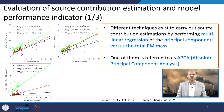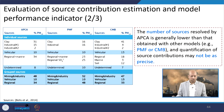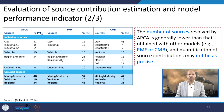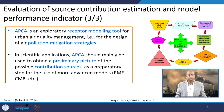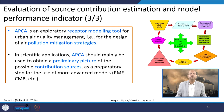For evaluating source contribution estimation and model performance, one important indicator is Absolute Principal Component Analysis (APCA). The number of sources resolved by APCA is generally lower than those obtained with PMF or CMB, and quantification may not be as precise. APCA is an exploratory receptor modeling tool for urban air quality management and design of pollution mitigation strategies, mainly used to obtain a preliminary picture of possible contributing sources as a preparatory step before using more advanced models like PMF or CMB.